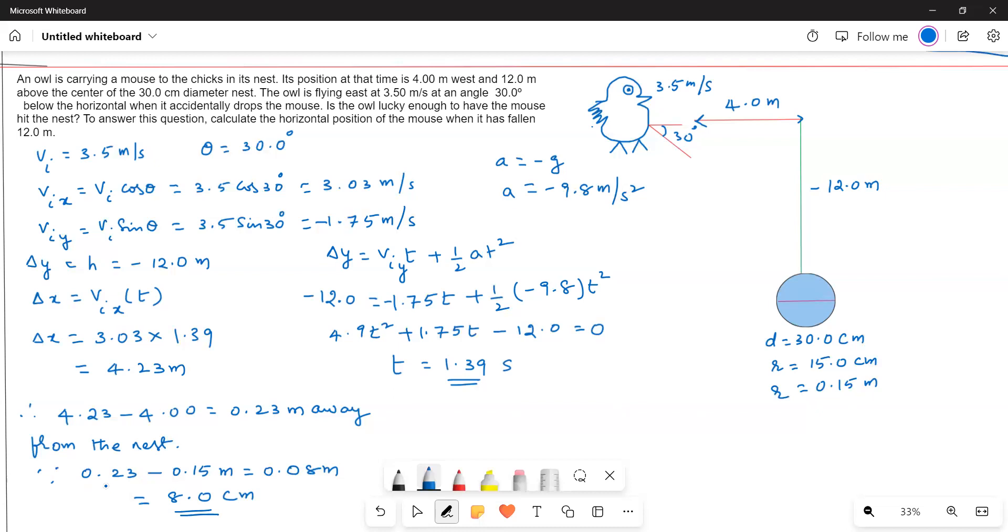Deducting 0.15 from 0.23, the mouse lands 8 centimeters away from the nest edge. If the owl had moved 8 centimeters closer, the mouse would have fallen in the nest.